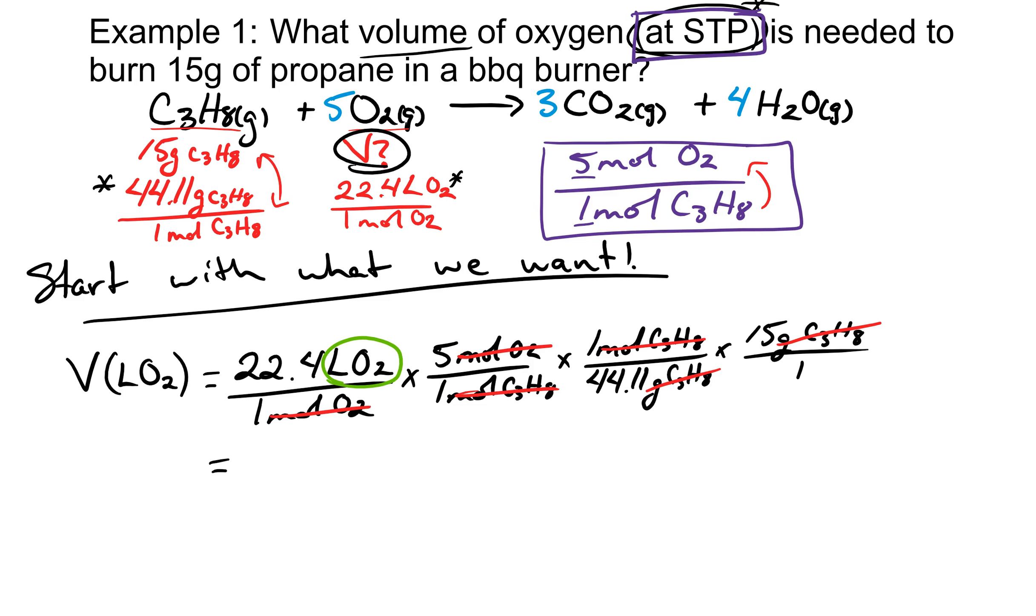So in my calculator, if I put 22.4 times 5 times 15, all divided by 1 times 1 times 44.1 times 1, I should get 38 liters of oxygen. If I burn 15 grams of propane, it will require 38 liters of oxygen in order to completely combust.